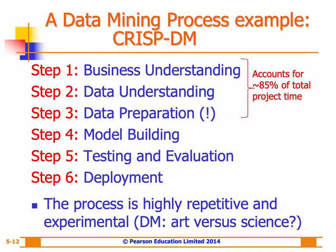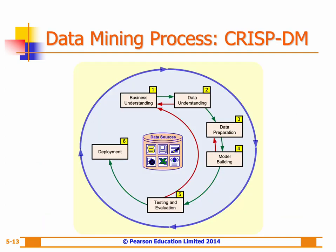The CRISP-DM process involves a sequence of six steps, starting with understanding the business and the need for the data mining project, and ending with deployment of the solution that satisfies the specific business needs. While these six steps are sequential in nature, in reality we follow a more iterative, cyclic process due to the complexity of the business problem and the knowledge and experience of the analysts involved.